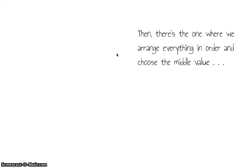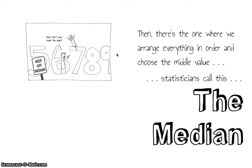Next one we've got: put everything in order and then choose the middle value. Statisticians call this the median, because median is an old word for middle.